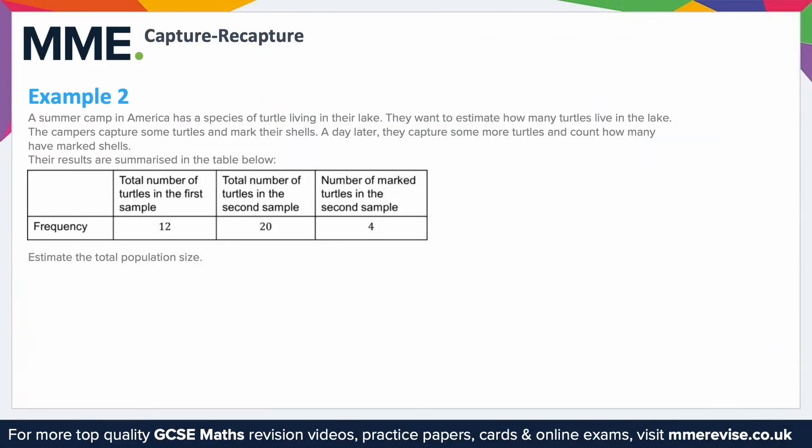A summer camp in America has a species of turtle living in their lake. They want to estimate how many turtles live in the lake. The campers capture some turtles and mark their shells. A day later, they capture some more turtles and count how many have marked shells. The results are summarised in a table. The total number of turtles in the first sample was 12, so that's how many they tagged. The total number in the second sample was 20, and 4 of those had the tag.